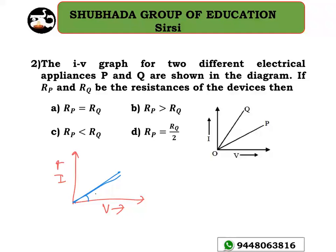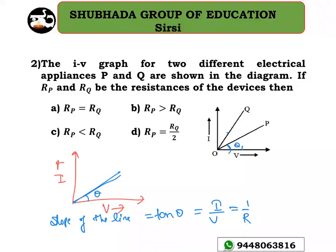The slope of the line equals tan θ, which equals I divided by V, which equals 1/R. So the slope is inversely proportional to resistance R. In the graph there are two angles θ1 and θ2, and tan θ2 is greater than tan θ1. Since slope is inversely proportional to R, a steeper slope means lower resistance.